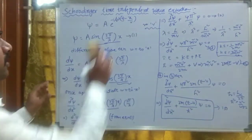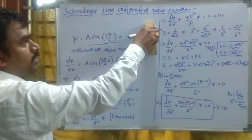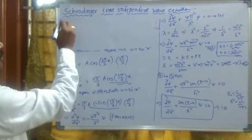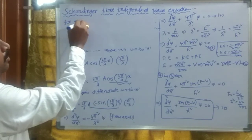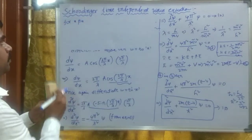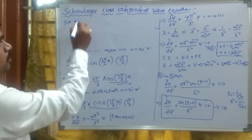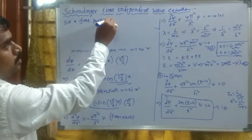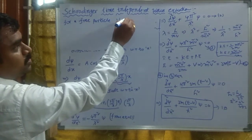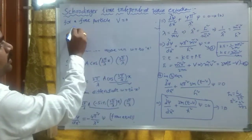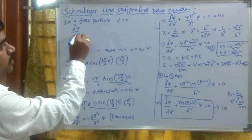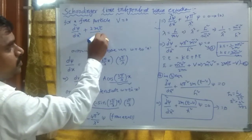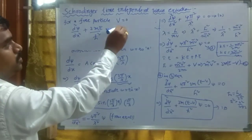For a free particle, the potential energy V is 0. So the equation simplifies to: d²ψ/dx² + (2mE/ħ²)·ψ = 0.